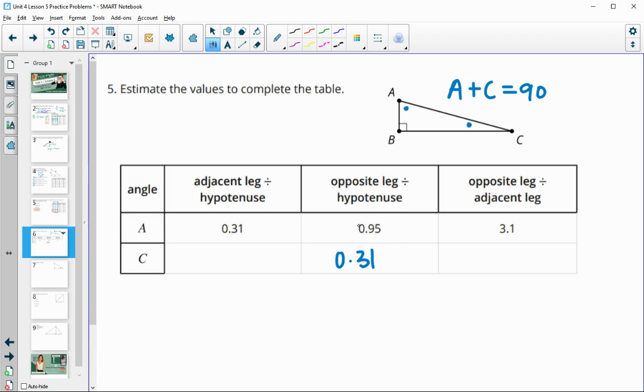Adjacent over hypotenuse for A, or sorry, opposite over hypotenuse for A is 0.95, so that's going to be the adjacent over hypotenuse for C. So these two just switch columns.